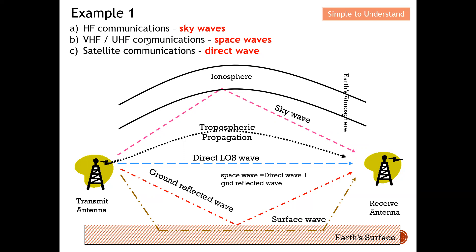For VHF or UHF communication — which are higher frequencies compared to HF — the mode of propagation is most likely space wave. Space wave is a combination of a direct wave plus the ground reflected wave. The direct wave travels straight to the receiver, while some portion of the wave is reflected from the ground before reaching the destination. So VHF/UHF communication mainly consists of space wave.